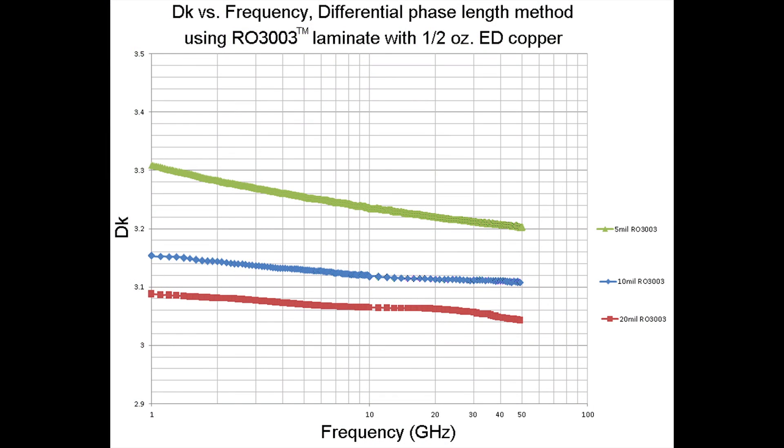Shown in this chart are circuits made on Rogers Materials RO3003 laminate using half-ounce ED copper. The differences shown are circuits made on that same material and same copper, but at different thicknesses. The green curve is from circuits made on the 5 mil thick RO3003, the blue curve from the 10 mil thick, and the red curve from the 20 mil thick. You can see distinct differences, where the 5 mil thick RO3003 circuits have the highest dielectric constant versus frequency curve, which makes sense because that's the thinner circuit.